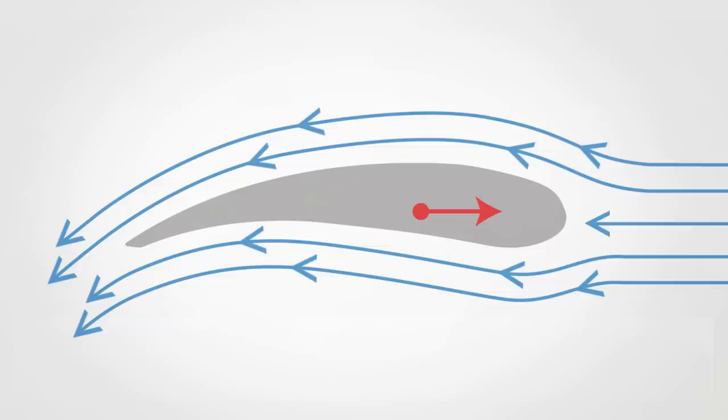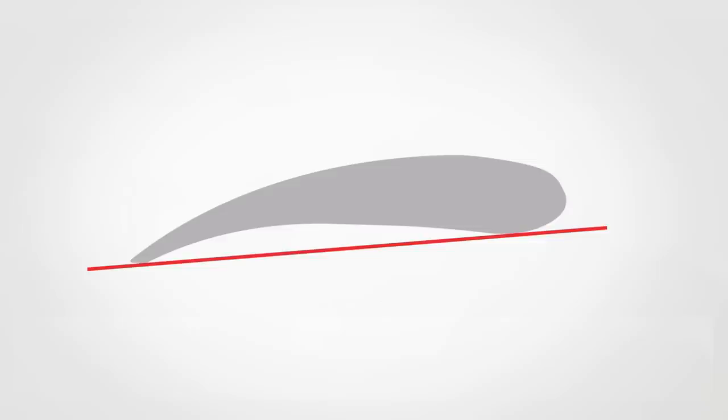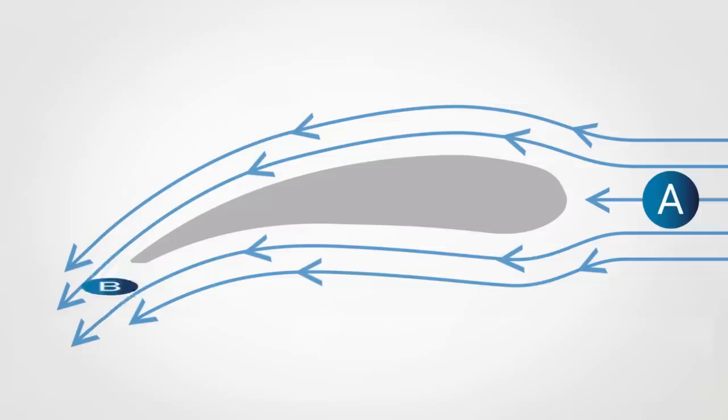But how does the wing rise when it is hit by the airflow? First of all, it is necessary to say that the wing is placed in a slightly inclined position to improve the airflow. In addition, the airflow entering at point A should have the same speed as the airflow at point B. In this situation, we are led to believe that the upper airflow is faster because it has to travel more airfoil surface than the lower airflow.